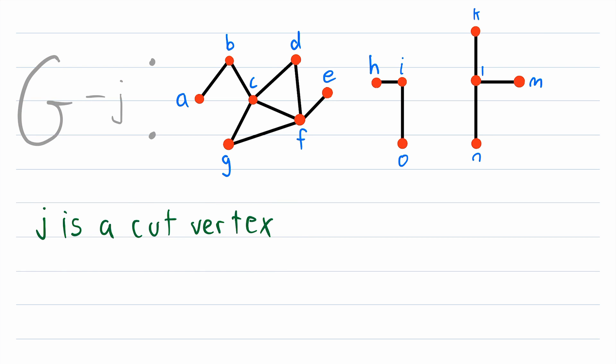Now let me restore the graph G back to its original state. So now we're back to the original graph G that has two components. What would happen if we delete G and its incident edges? Well, let's try it. We'll delete the vertex G and delete its incident edges.